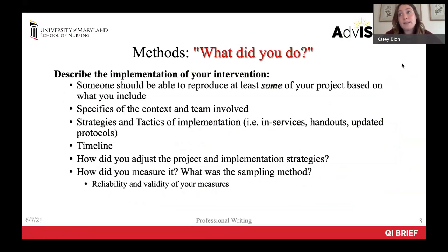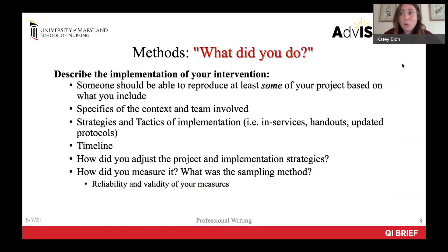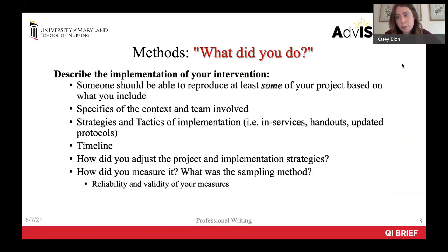The method section comes next and should answer the basic question: what did you do? You want someone reading your method section to very clearly understand what you did and how you measured it. Think about what you wish you had read prior to starting your own project — what would have helped you be successful? You want to clearly explain what kind of context this was: a large medical center, a private practice, or an outpatient clinic, what type of unit or organization, and what type of population was the focus.